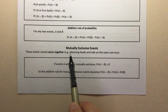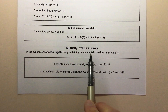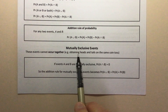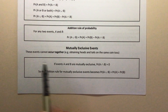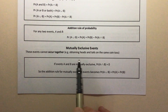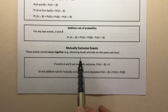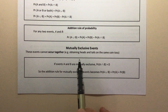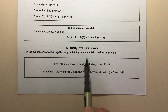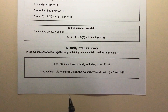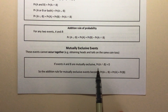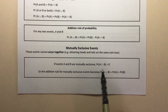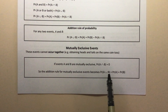Last little bit of theory before we get into some examples: mutually exclusive events. Mutually exclusive just means the two events cannot both happen together. For example, when you toss a coin, you can't get heads and tails — you can only get one or the other. So those two events are mutually exclusive, which means the probability of A and B both occurring is zero.